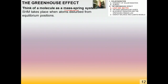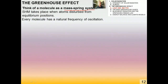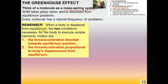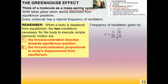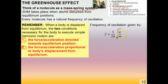If you think of a molecule as a mass-spring system, simple harmonic motion takes place when atoms are disturbed from their equilibrium positions. Every molecule has a natural frequency of oscillation. The two conditions necessary for simple harmonic motion are: number one, the force or acceleration is directed towards the equilibrium position at all times; and number two, the force or acceleration is proportional to the body's displacement from equilibrium. You'll do some problems in your homework treating molecules as mass-spring systems. The frequency of oscillation is given by f = (1/2π)√(K/M), where K is the spring constant and M is the mass.